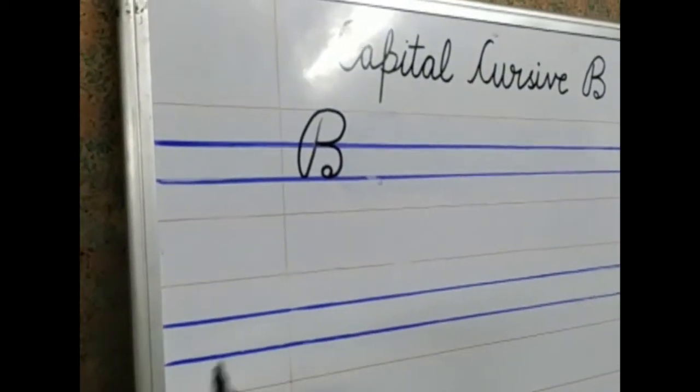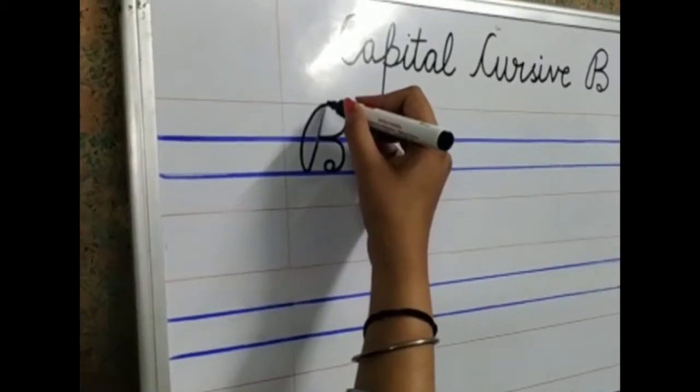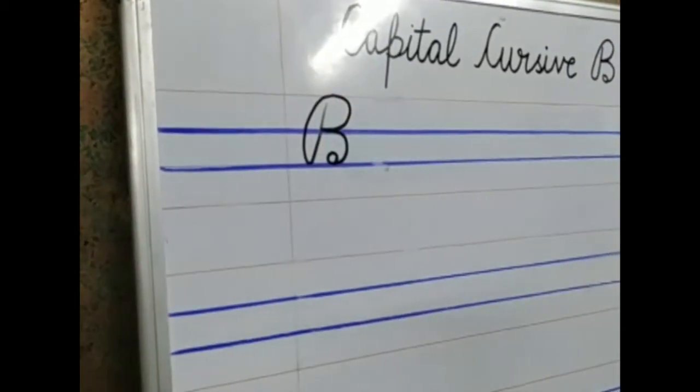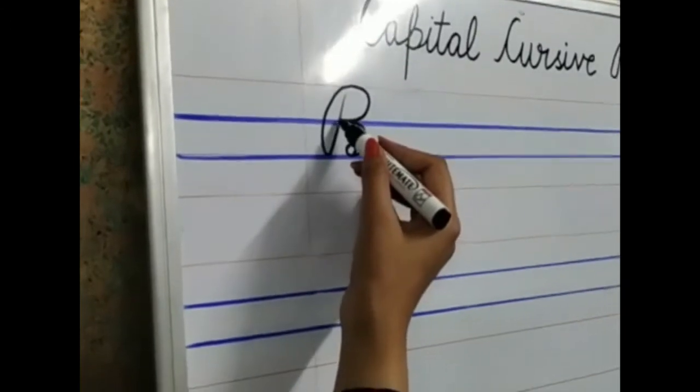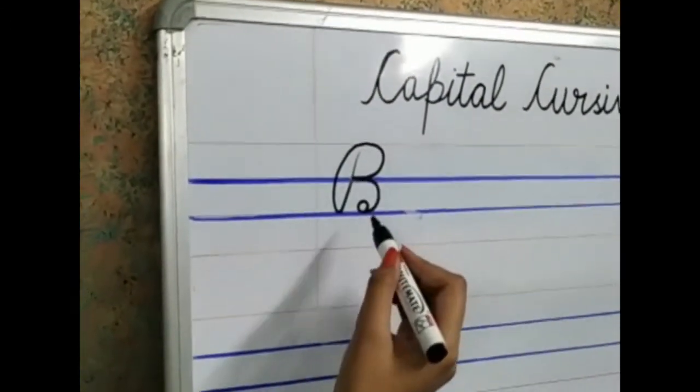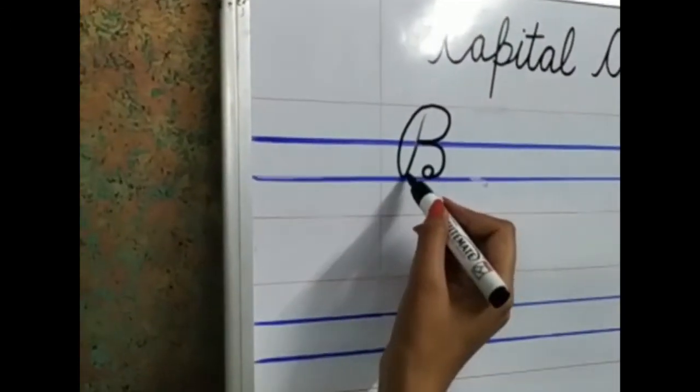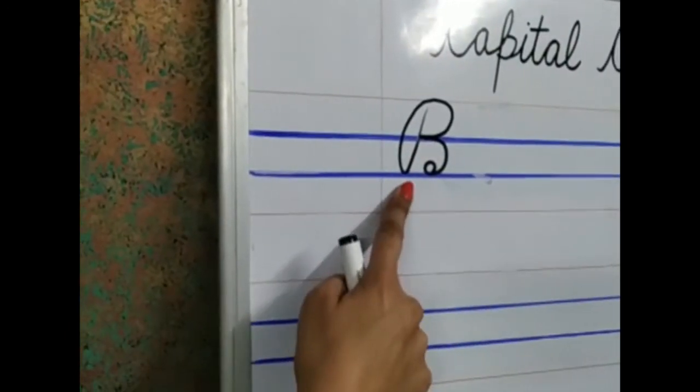Now children, careful in this. This line will not touch this loop. Alright. This will touch this line. And this circle is not going to touch the loop. Can you see the space?